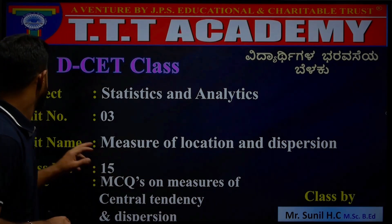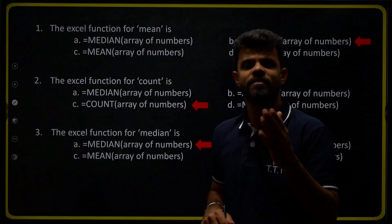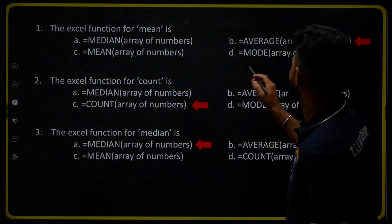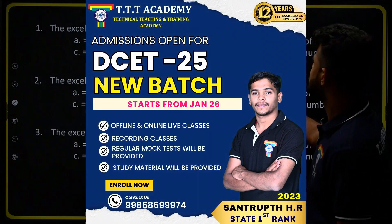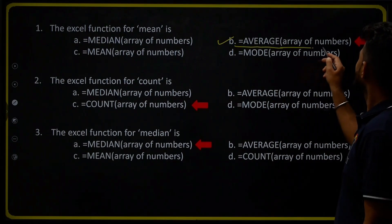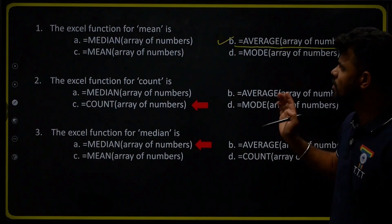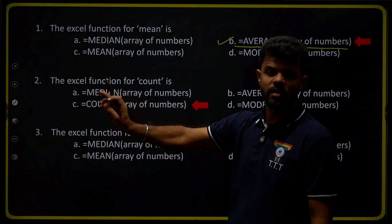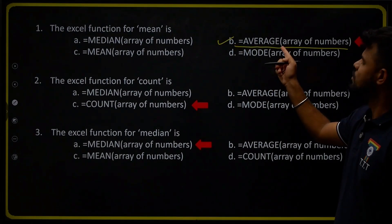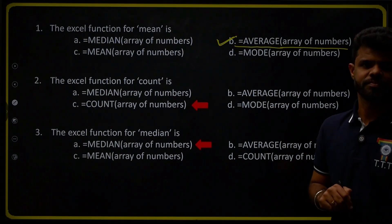The first MCQ: the Excel function for mean. The Excel formula used to calculate mean is option B, that is AVERAGE of an array of numbers — =AVERAGE(array of numbers). Therefore option B is the right answer.